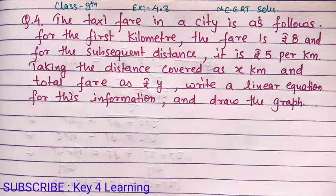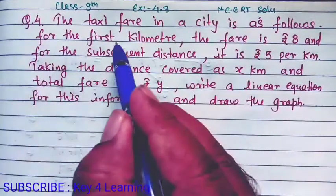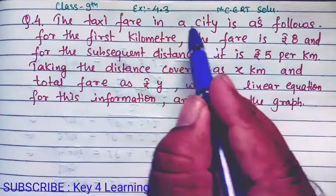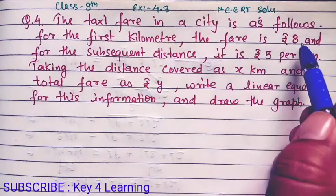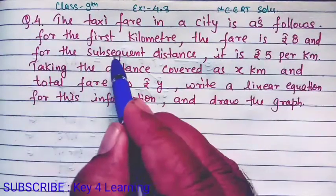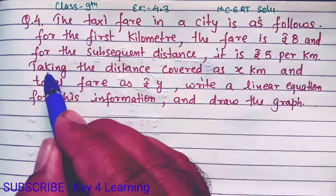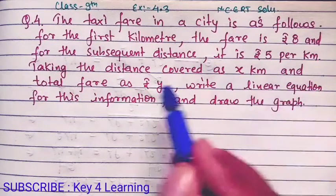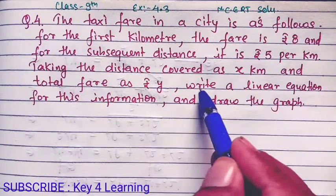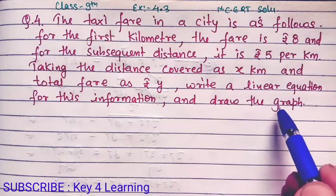Hi everyone, welcome. In this video we will solve the question from Class 9th Exercise 4.3, Question Number 4. The question is: the taxi fare in a city is as follows — for the first kilometer the fare is rupees 8, and for the subsequent distance it is rupees 5 per kilometer. Taking the distance covered as x kilometers and total fare as rupees y, write a linear equation for this information and draw the graph.